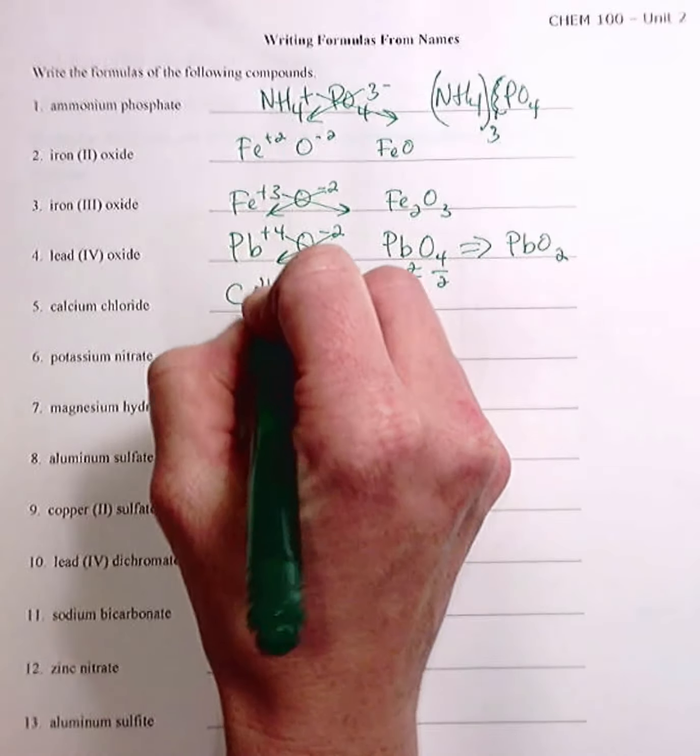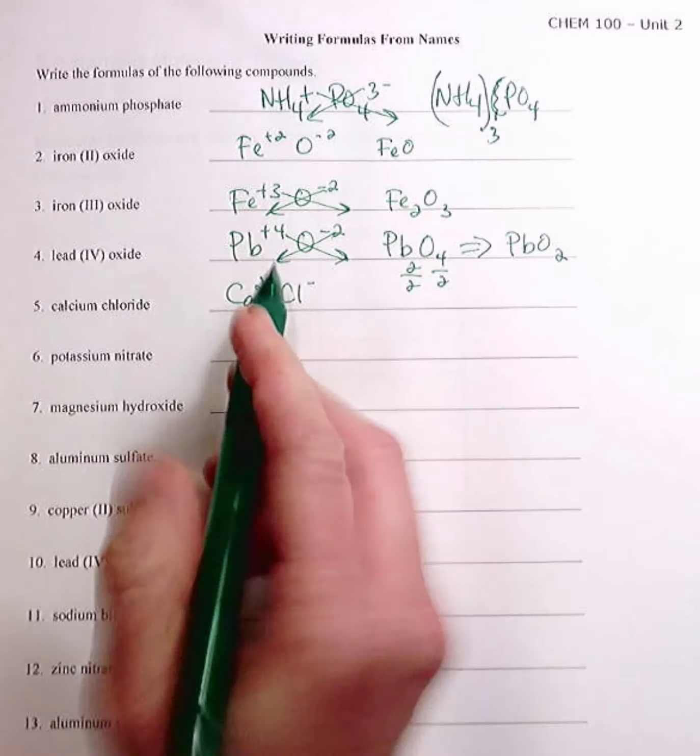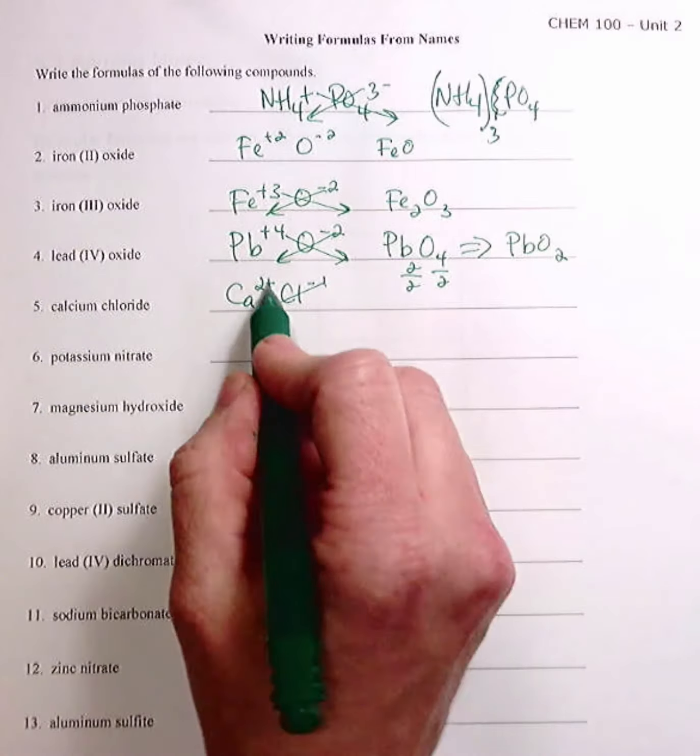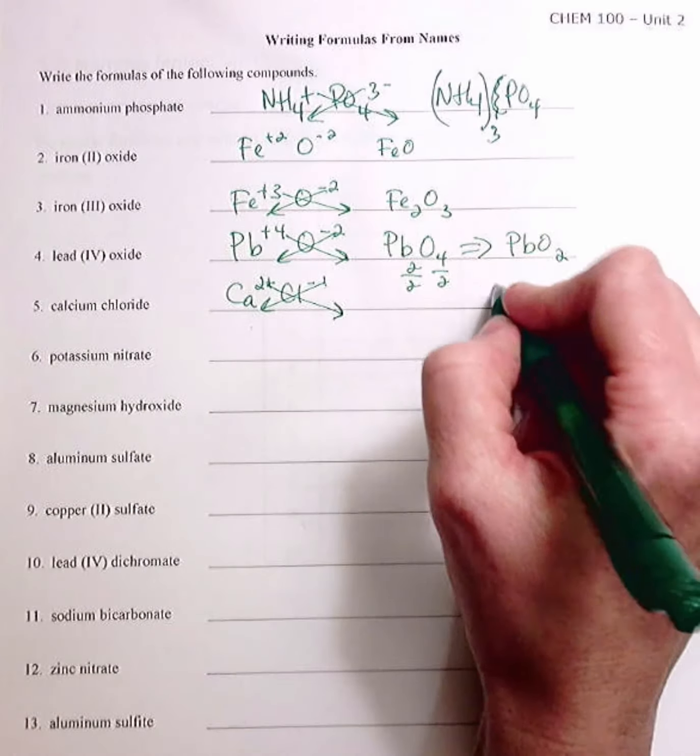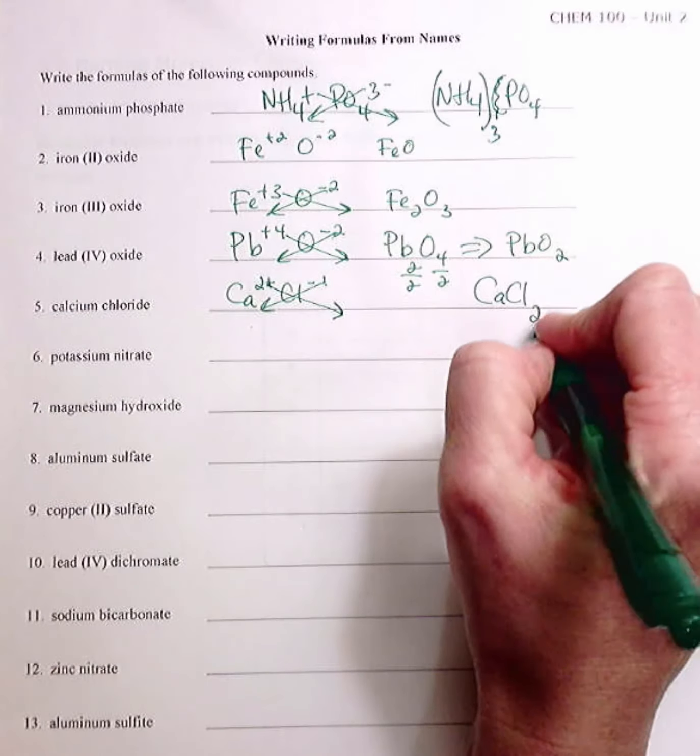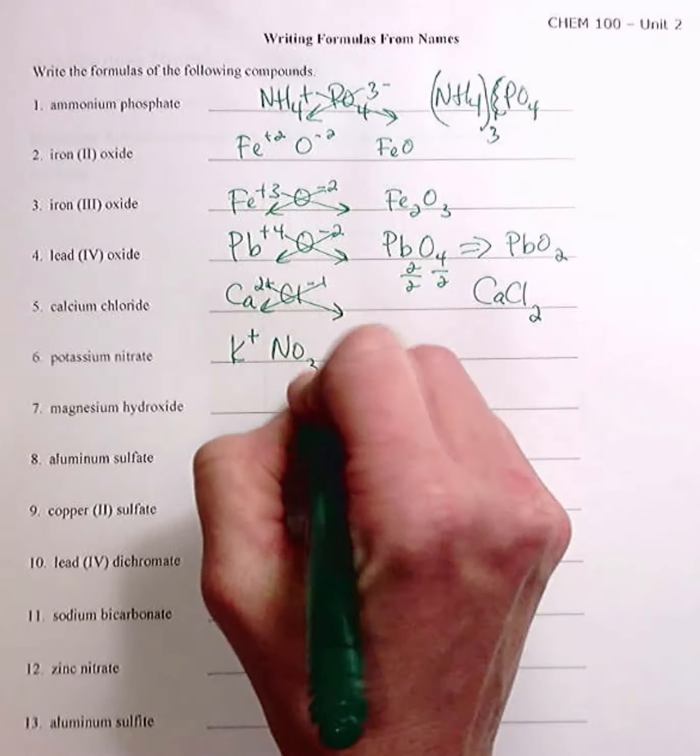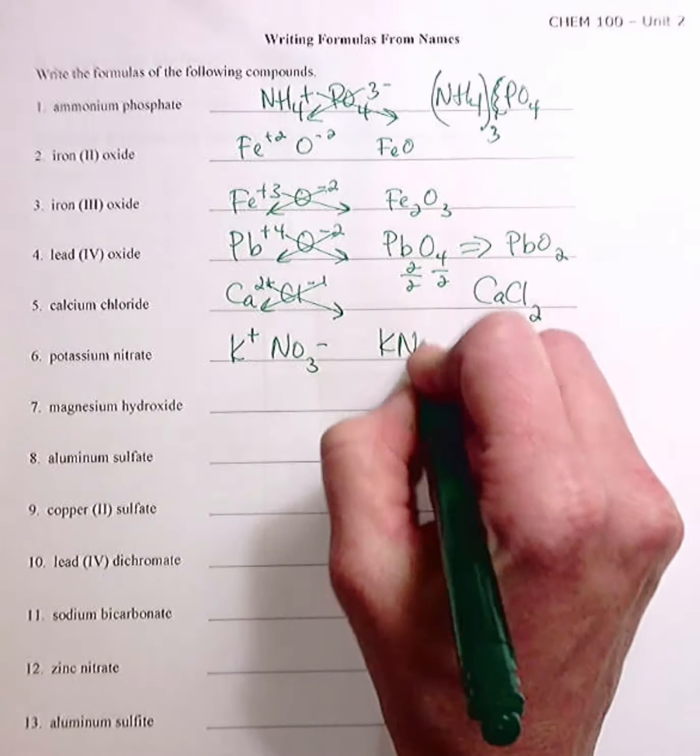Calcium chloride, Ca2 plus, Cl minus, and it doesn't matter which way you write the numbers, just as long as you have the right charge. So that comes out to CaCl2. Potassium nitrate, K plus, NO3 minus, so that's KNO3.